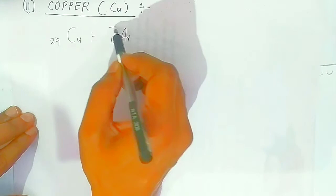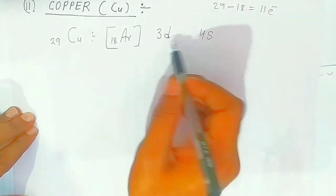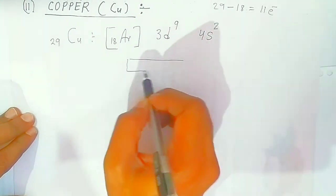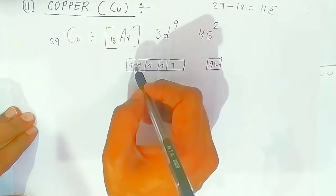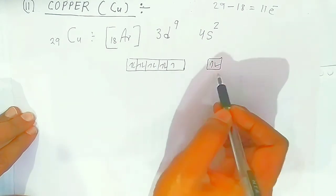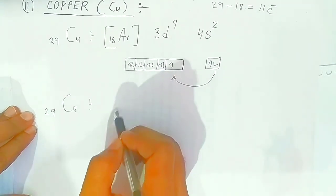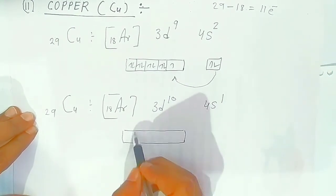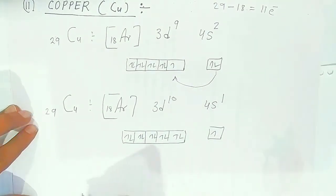The same thing happens with copper. Copper has atomic number 29, with argon (18) as the core. Remaining electrons: 29 minus 18 equals 11 electrons to distribute in 3d and 4s. Theoretically, 2 electrons go to 4s2 and 9 electrons go to 3d, giving [Ar] 3d9 4s2. In the orbital diagram, after filling all sub-cells singly, pairing takes place. Due to full-filled stability, one electron transfers from 4s to 3d.